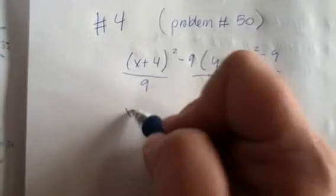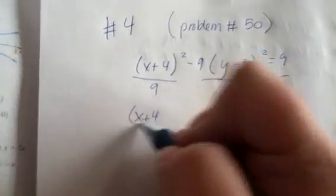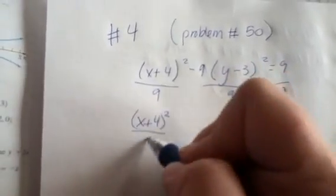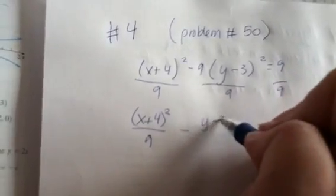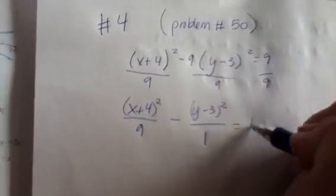...so then we will have (x+4)² over 9 minus (y-3)² over, oh, 9 over 9 is 1. That's okay. And then we'll have 1 over here.